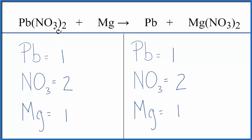When you're balancing equations with polyatomic ions like NO3 and they appear on both sides, if you count them as one thing, it makes the balancing a lot easier and you're less likely to make mistakes.